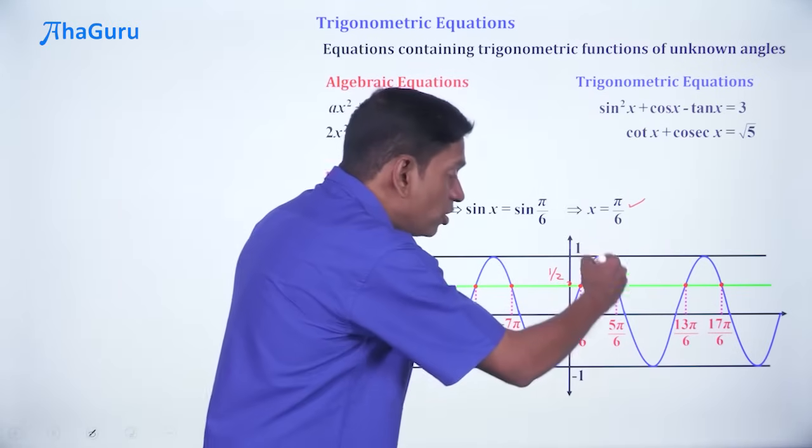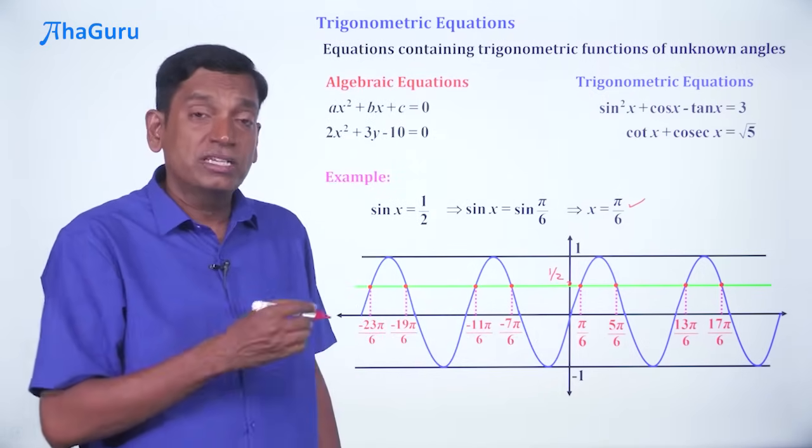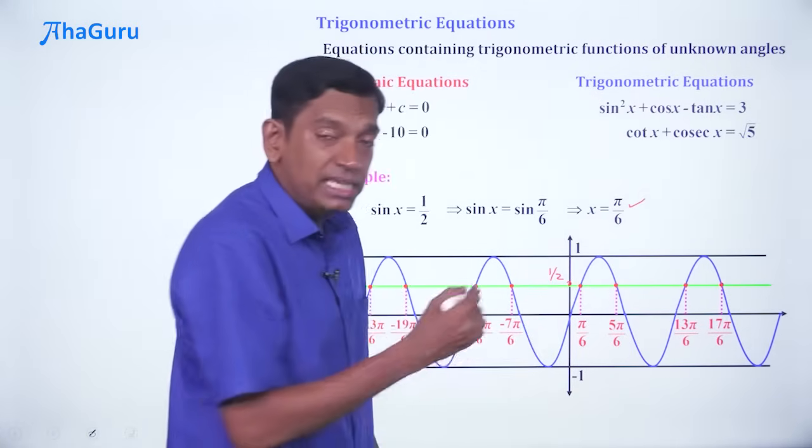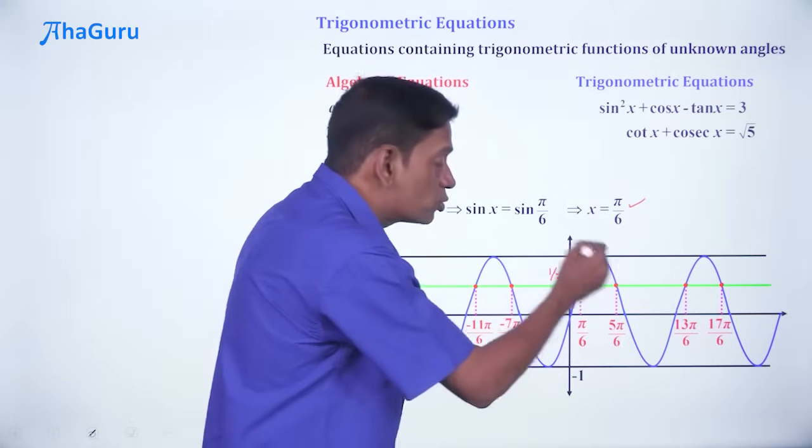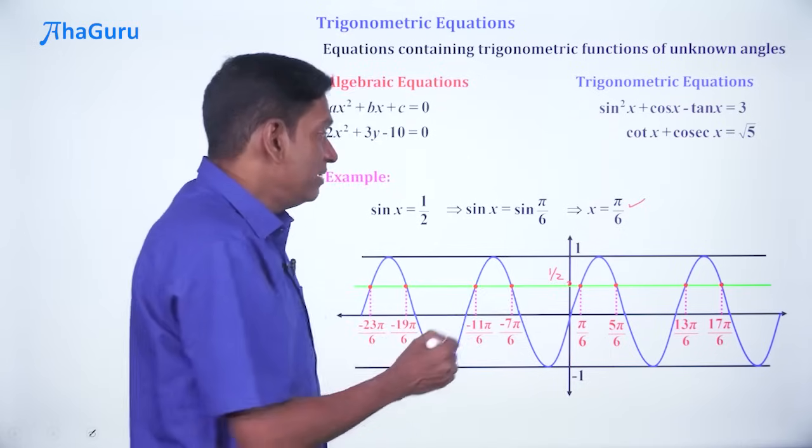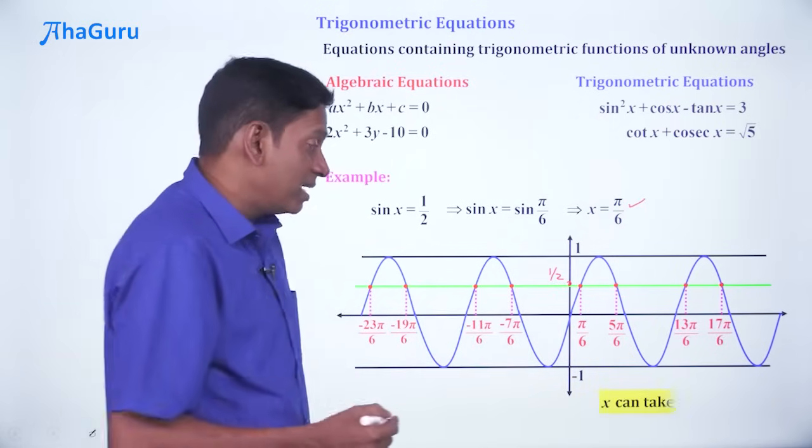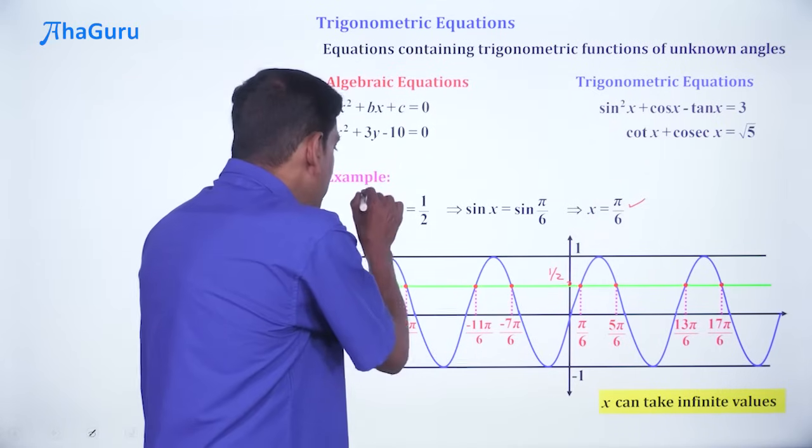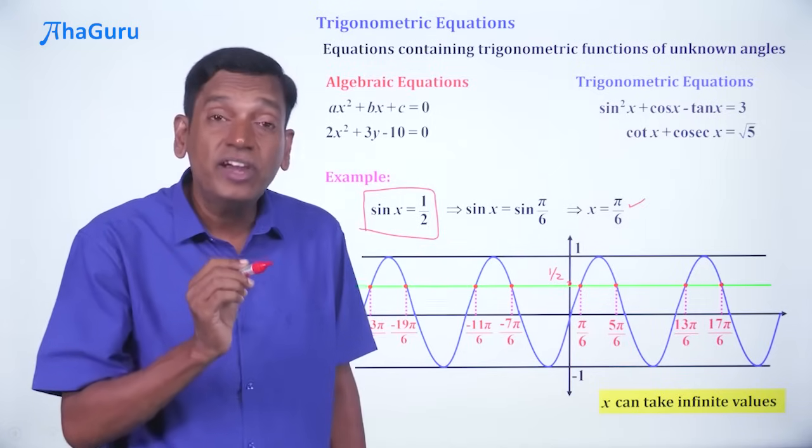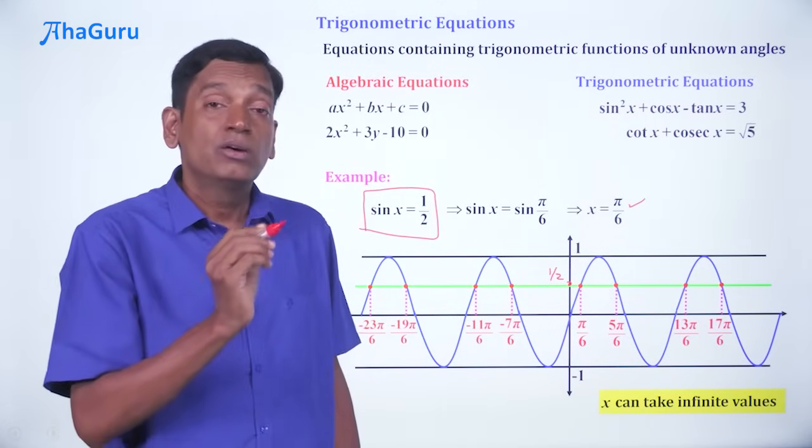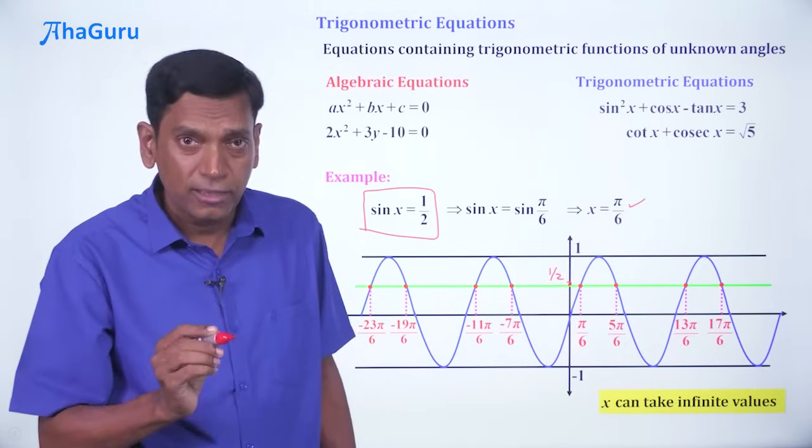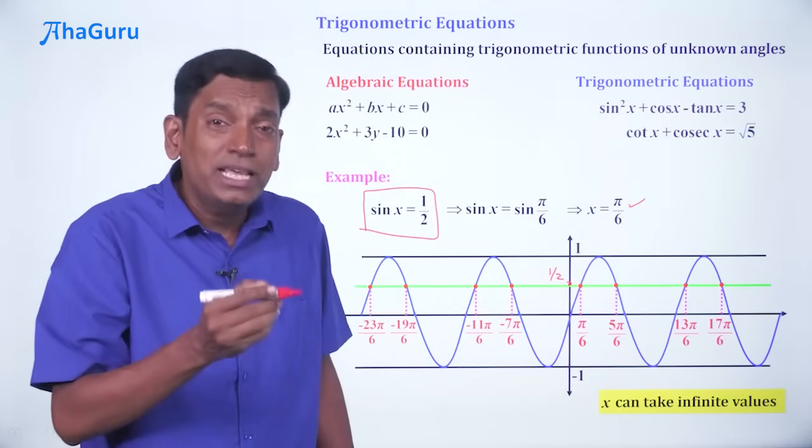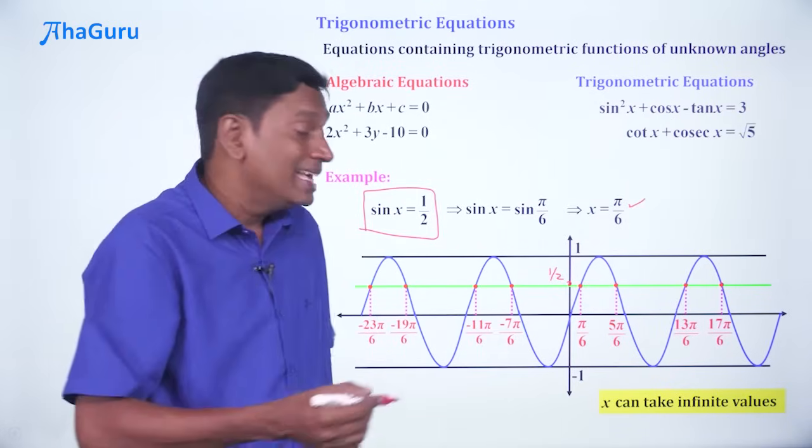Because sin x is a periodic function. All trigonometric functions are periodic. That means the same values will keep repeating. So you are going to have multiple solutions like this. So we can say that x can take infinite different values or this equation sin x = 1/2 has infinite solutions. This is the big difference between what we have normally seen in algebraic equations and here. Quadratic cubic will have two solutions, three solutions, etc. The simplest possible trigonometric equation has infinite solutions.